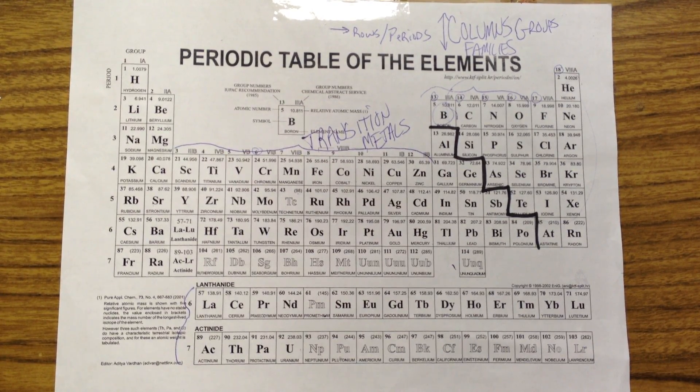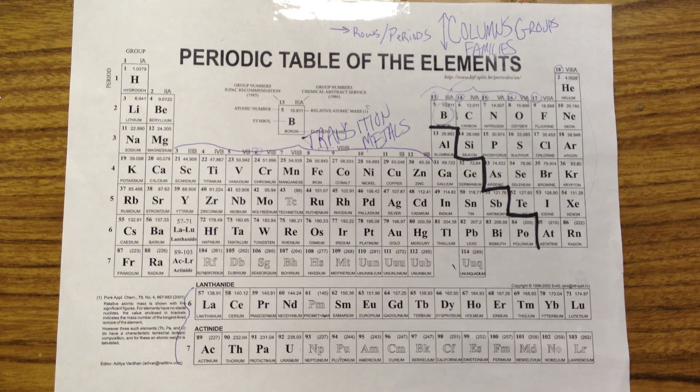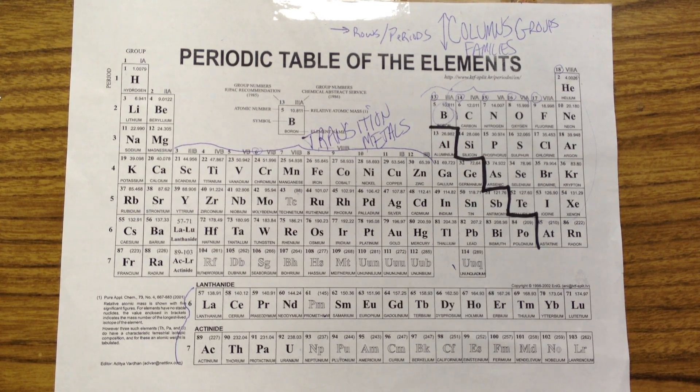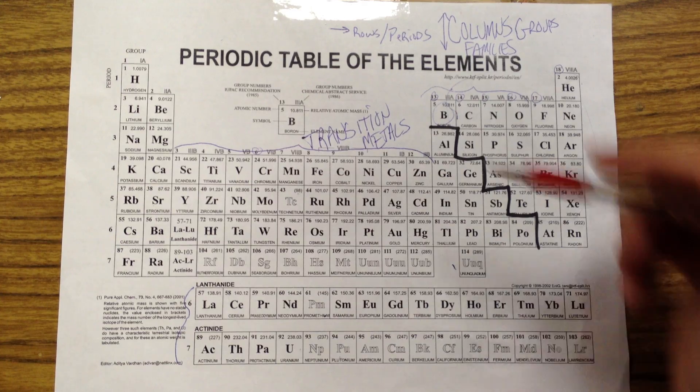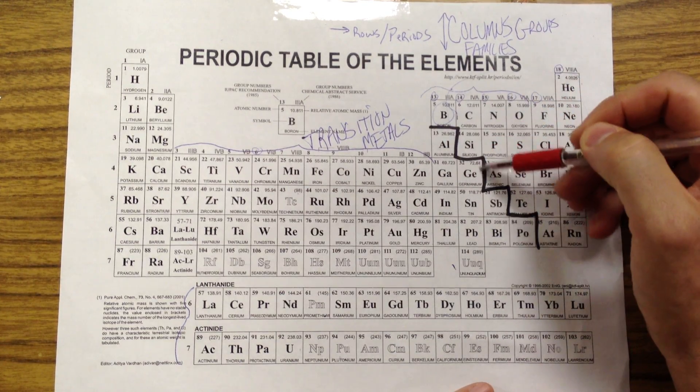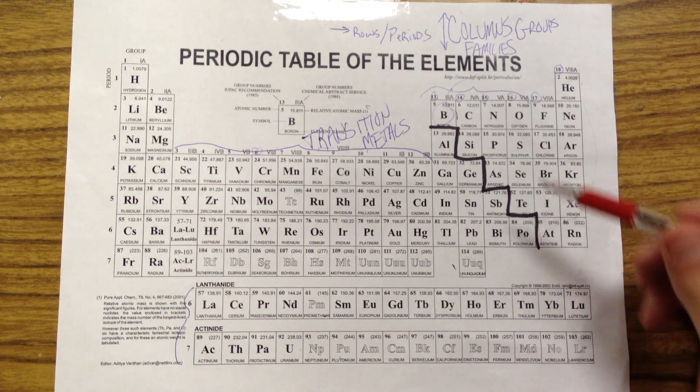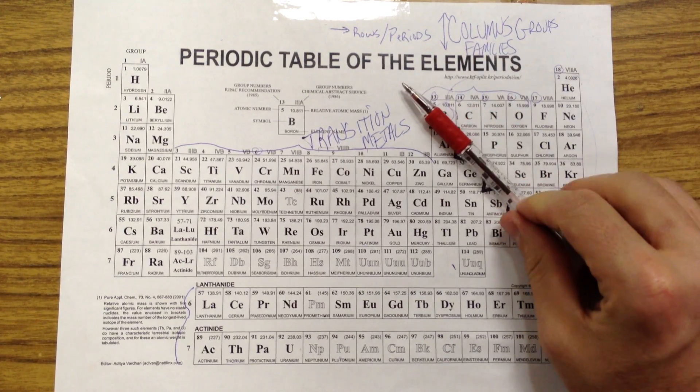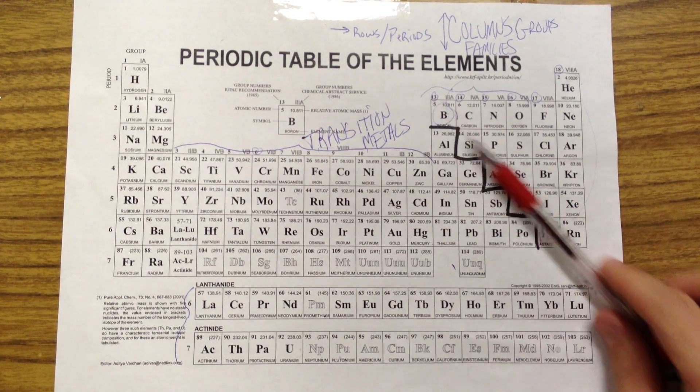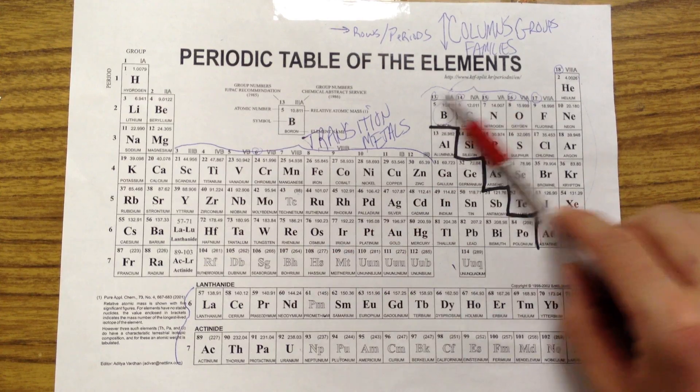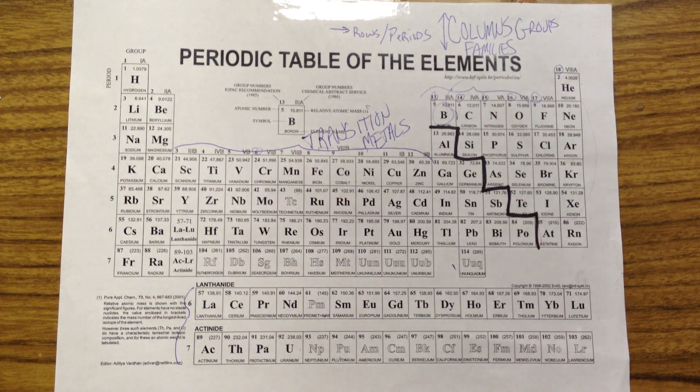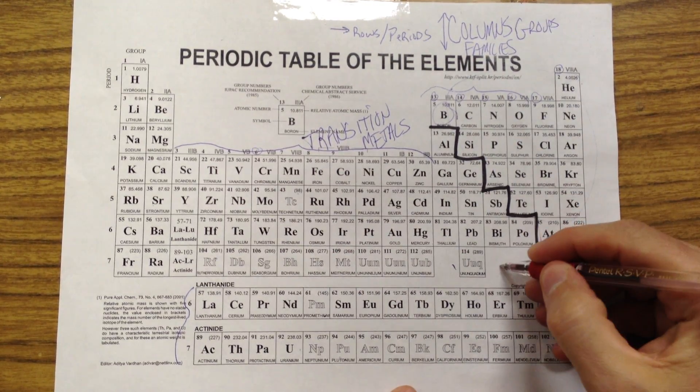So there's one other category that we should talk about while we're here, and that is these things that are kind of in between. If we look particularly at these guys that are kind of touching the staircase, they are kind of at the dividing line. They're not exactly sure whether they're metals or whether they're non-metals. And so these things are called metalloids.